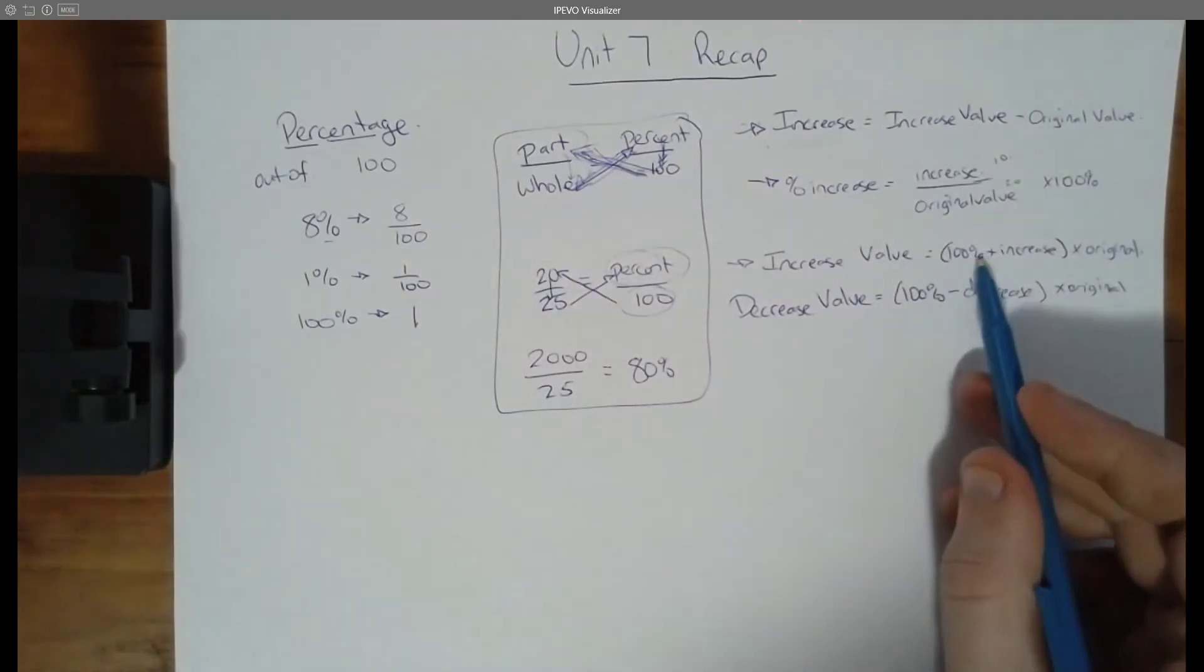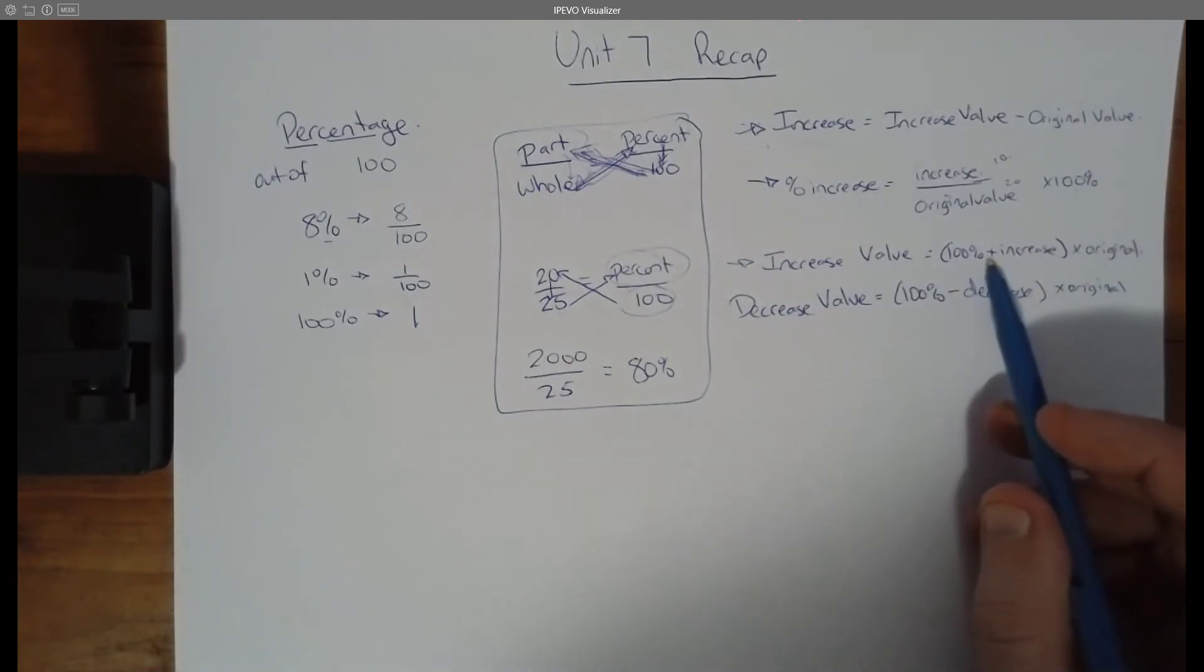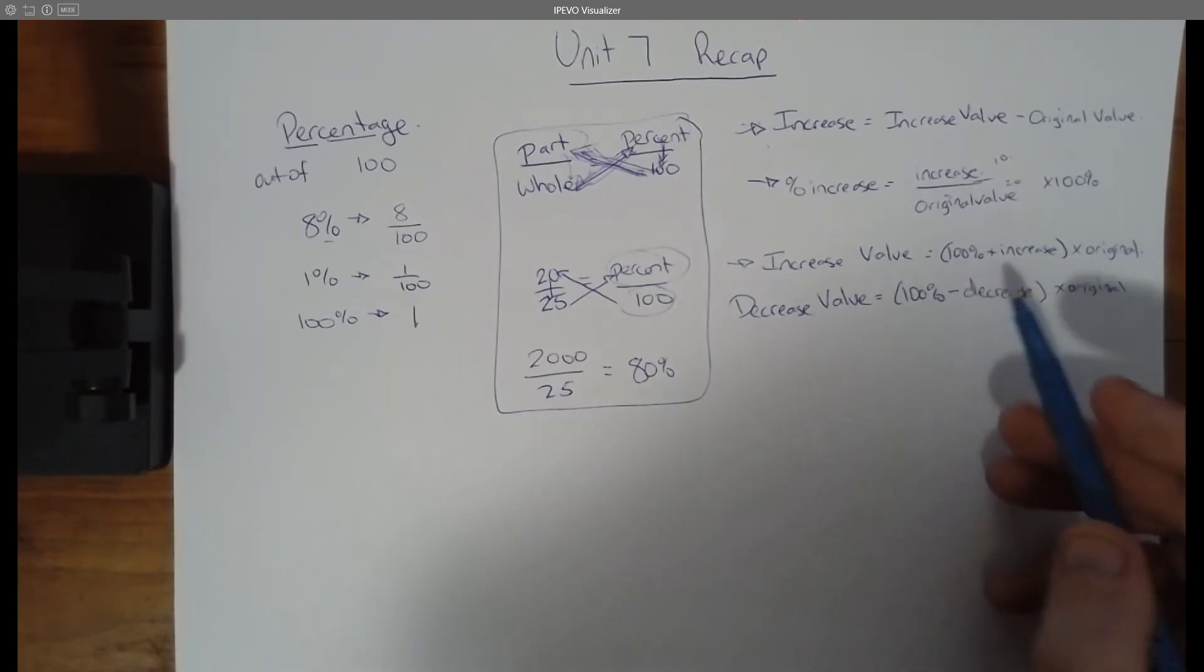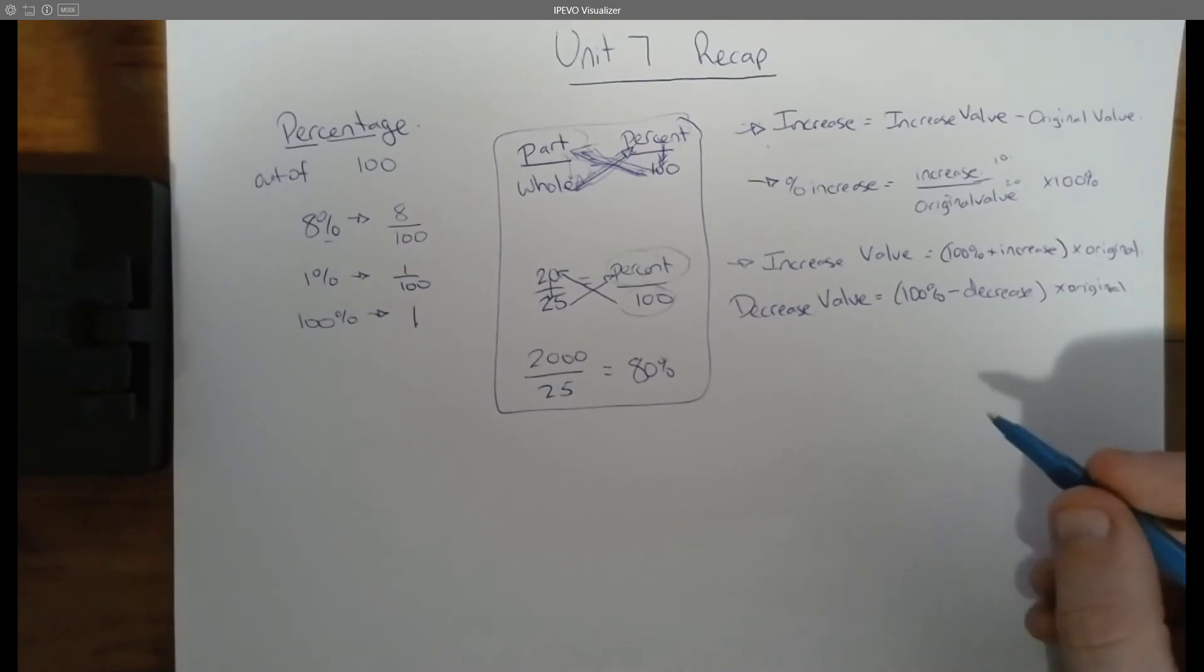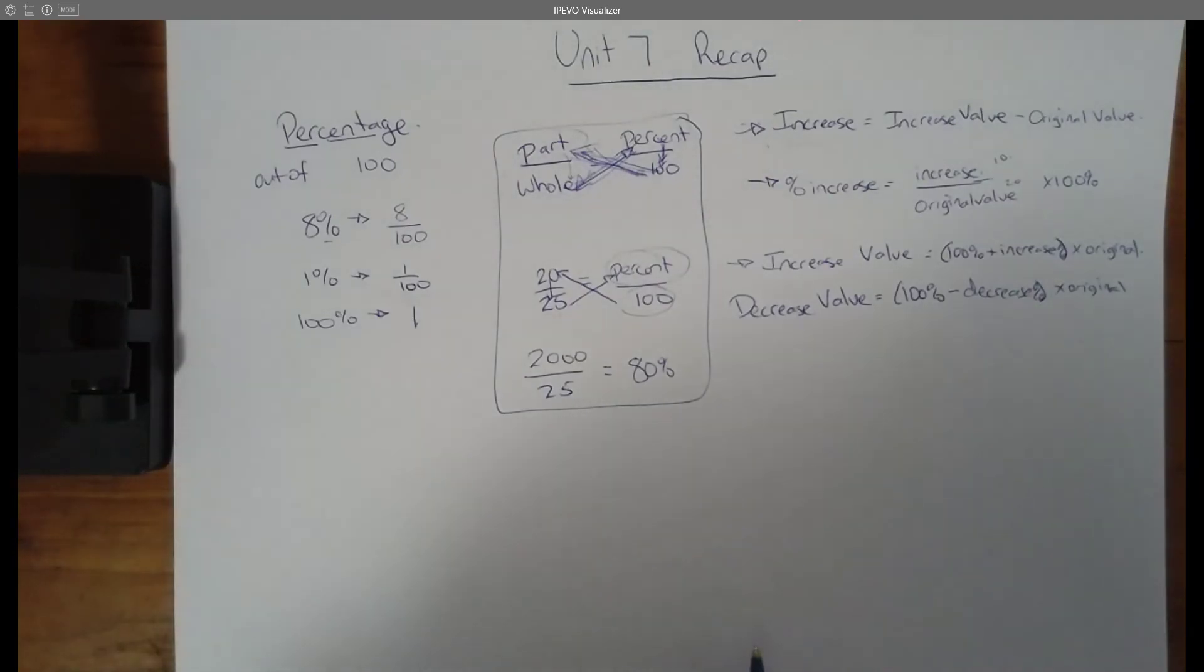So here we talked about, for example, something increased in value by 8%. So it's 108% the original. If it decreases in value by 8%, now it's 92% of the original. In other words, 100% minus 8%. And so these can kind of be important bits of information when you are trying to solve for increased value or decreased value.